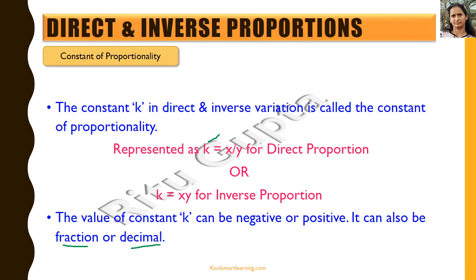An important thing to note: if we take a negative value of k, say minus 1, then x equals minus y. If the value of y is 2, then x equals minus 2, and if y increases to 3, x becomes minus 3. So the value of x is decreasing on the increase of y, but the magnitude is increasing. It is still called direct proportion because it still meets the condition that x by y is a constant. The same would be true for inverse proportion as well.